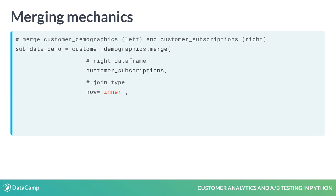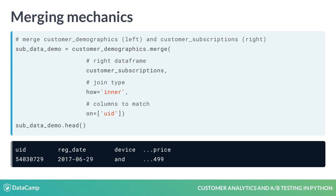Understanding SQL is not important for this course — it suffices to say that these arguments specify the behavior of which rows are returned in the final output. For our purpose, we will use an inner join, which returns all rows that are matched between the two data frames. The next argument is the on argument, which is a list of fields that appear in both data frames that we want to match the rows on. We will match on the UID field. As we can see in the output, the rows are associated with the corresponding row from the other data frame.